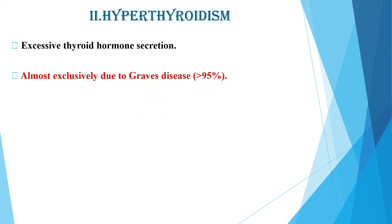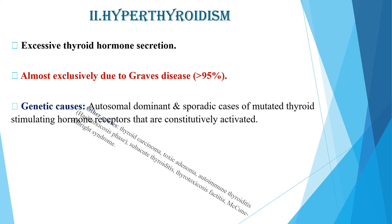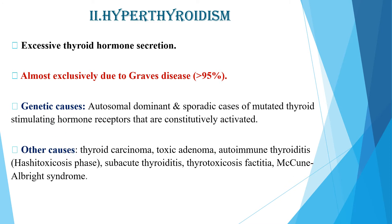Almost exclusively, hyperthyroidism is due to Graves disease in more than 95 percent of patients. There are genetic causes which might be autosomal dominant, and sometimes sporadic cases of mutated thyroid stimulating hormone receptors that are constitutively activated. Other causes include thyroid carcinoma, toxic adenoma, autoimmune thyroiditis, hashitoxicosis phase, subacute thyroiditis, thyroid factitia, McCune-Albright syndrome, and others.